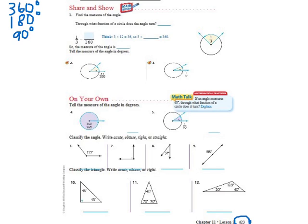So that's the example here that we're dealing with for number one. It says find the measure of the angle, and it's talking about the picture right here. Through what fraction of the circle does the angle turn? So that's just asking us what's the fraction that's colored in. And that would be one-third of this circle is colored in.